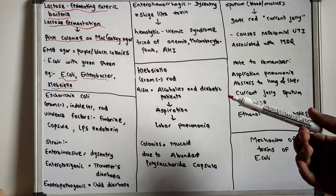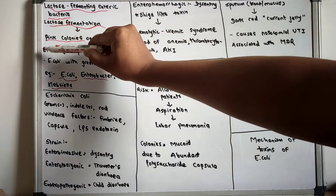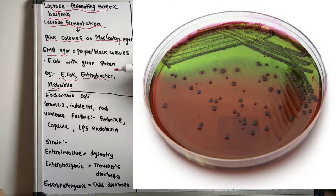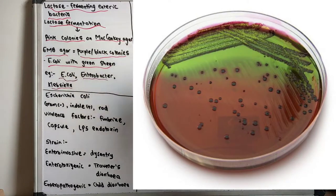But if we look at the EMB agar, that is eosin-methylene blue agar, the colonies are purple or black. The E. coli is with green sheen.